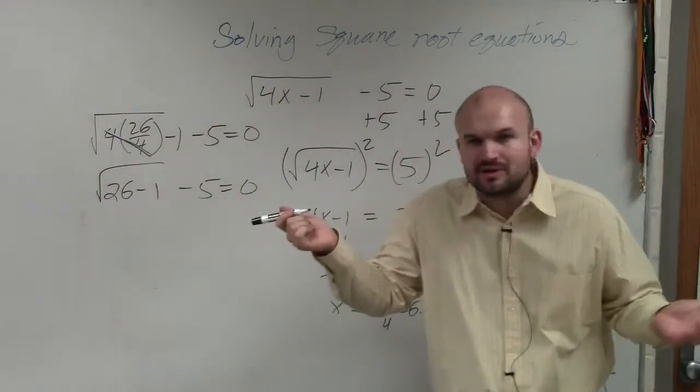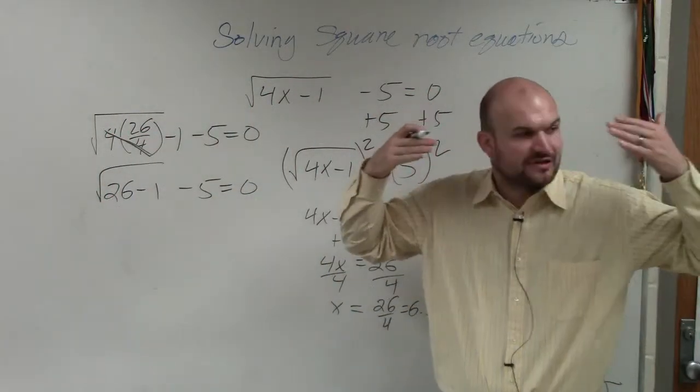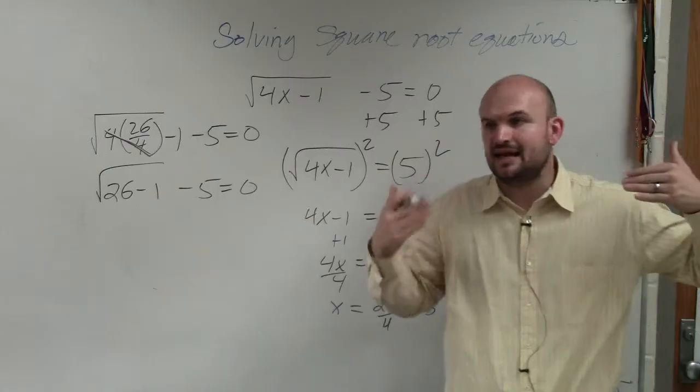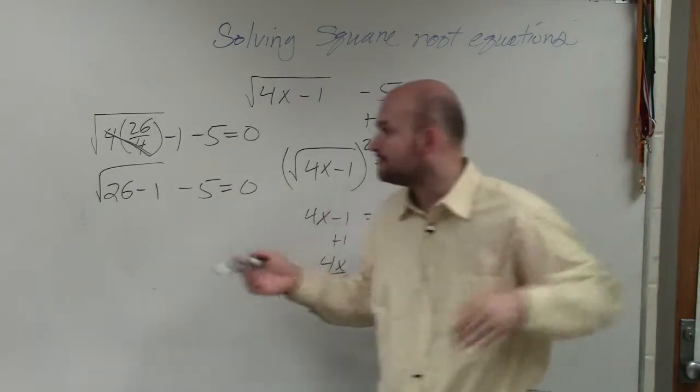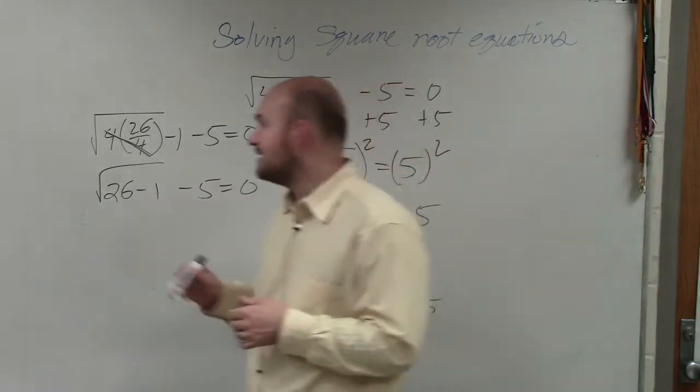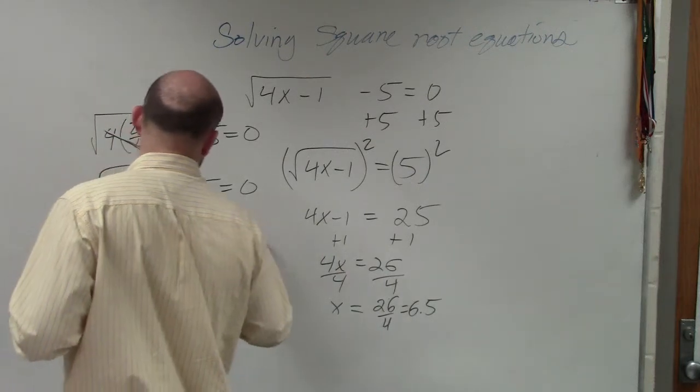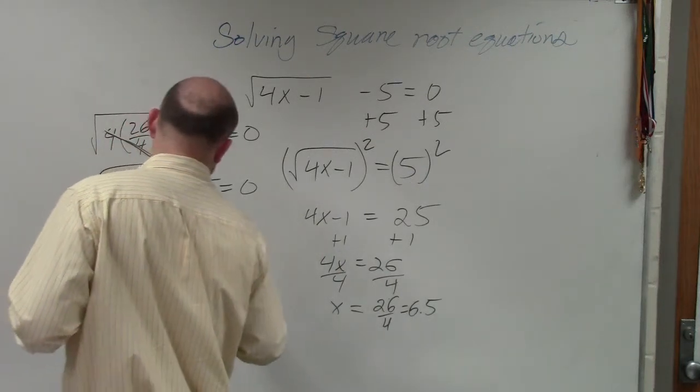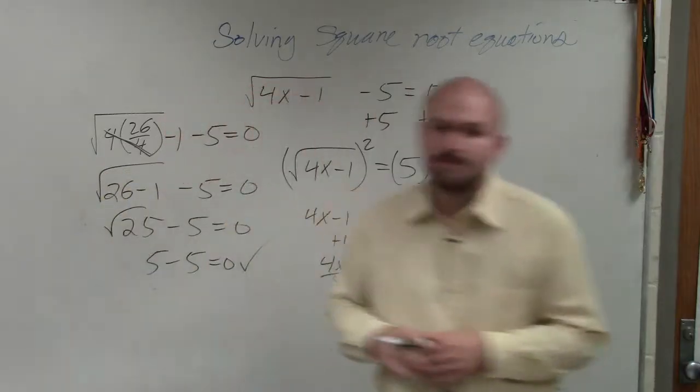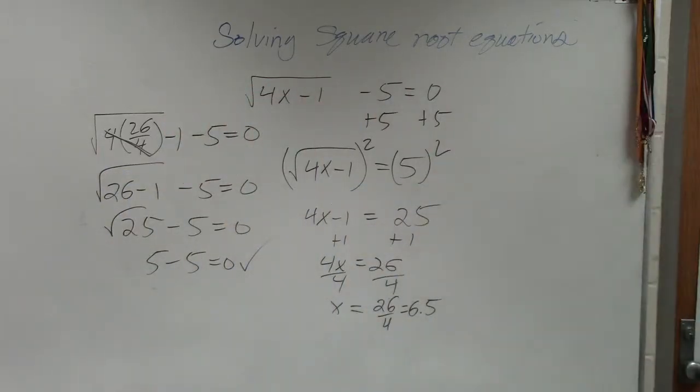If you would have done 6.5, you would have got the same answer. To me, it's just not visually as easy to see that it gives you 26. Then 26 minus 1 is 25. The square root of 25 minus 5 equals 0. So the answer works. I got the same thing even if I did 6.5.